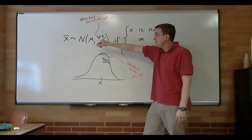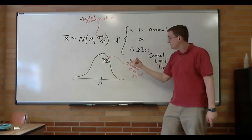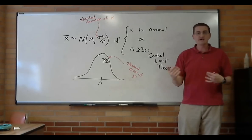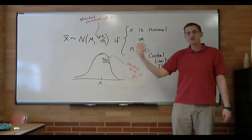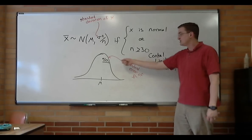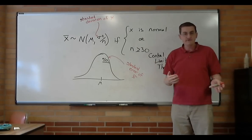But this whole thing is related to x̄. So σ over the square root of n you could call it the standard deviation of x̄. But that's confusing. You have a standard deviation for x, and a standard deviation for x̄. So we like to call this the standard error of x̄.